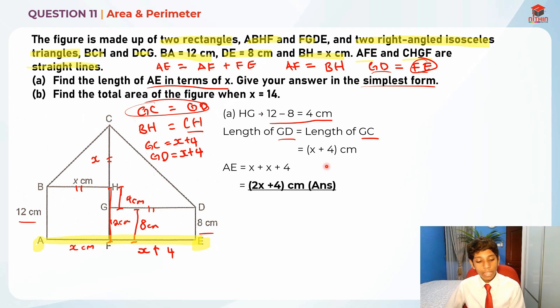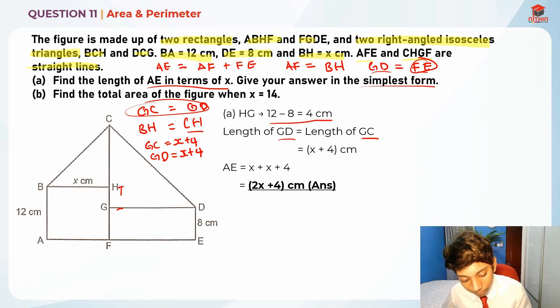Now let's read part B: find the total area of the figure when x is equal to 14. They're asking us to find the total area when x equals 14. Let me just erase everything over here so it's easier for us to see what we are working with. What we're going to do to find this is 12 times x, and to find this is 8 times (x plus 4).